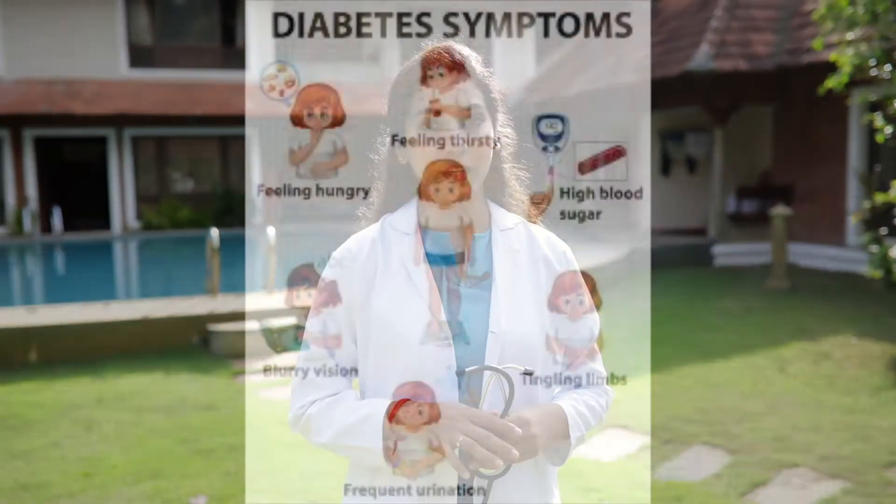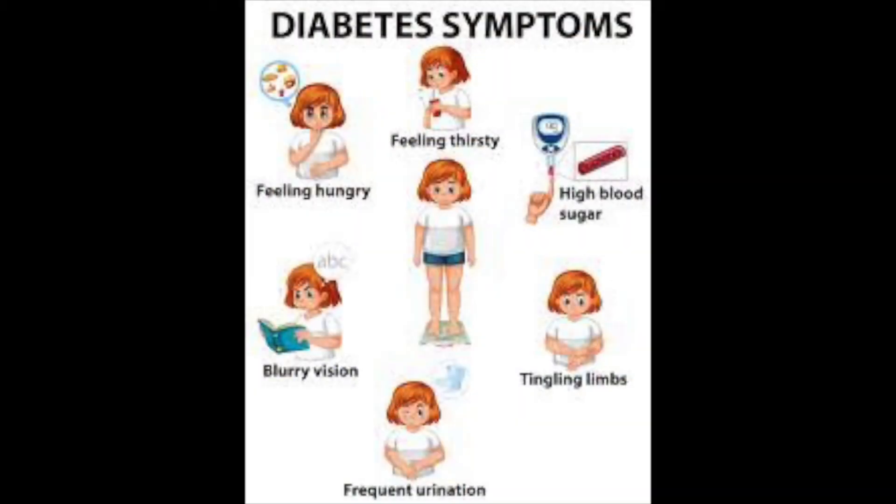Symptoms of diabetes according to Ayurveda include excessive urine formation and frequent urination, increased hunger, excessive thirst, fatigue, weight loss or weight gain, and blurred vision.